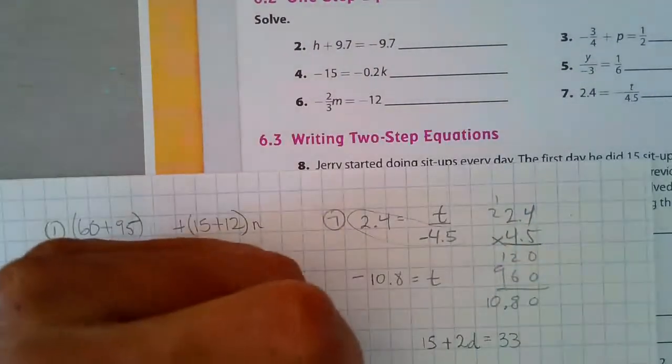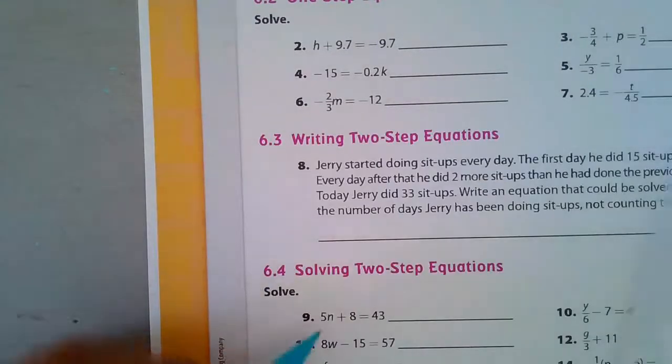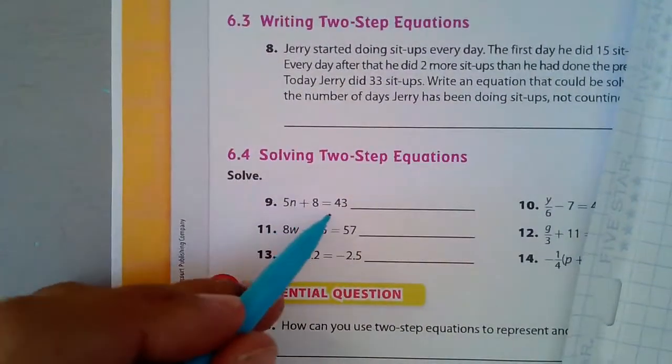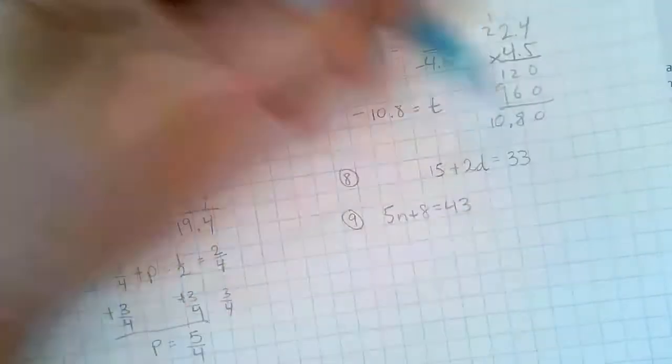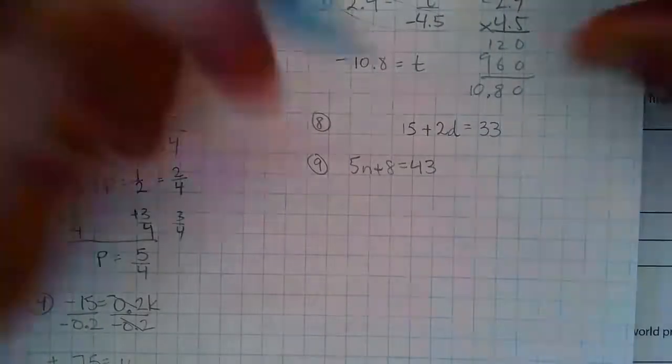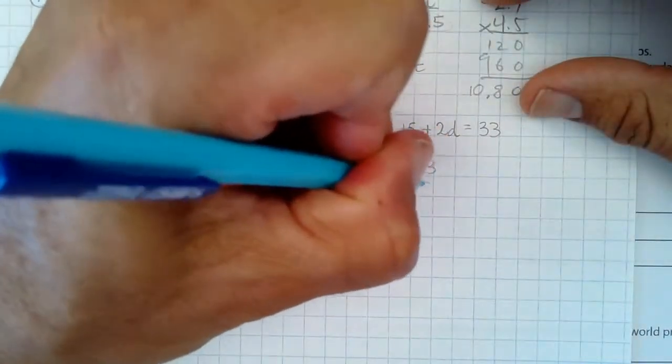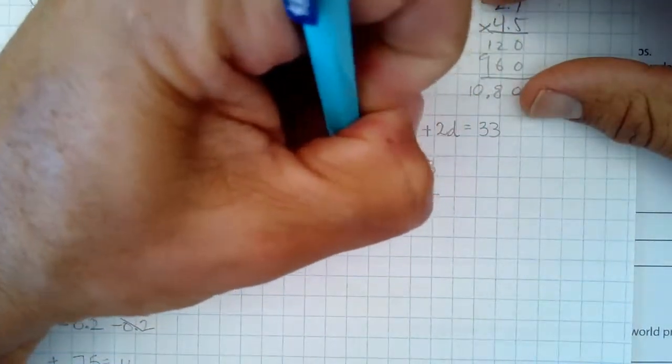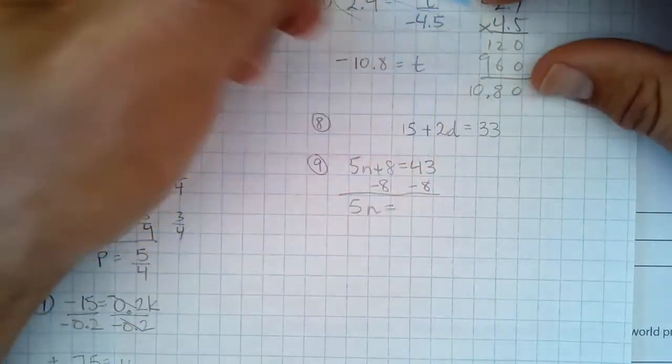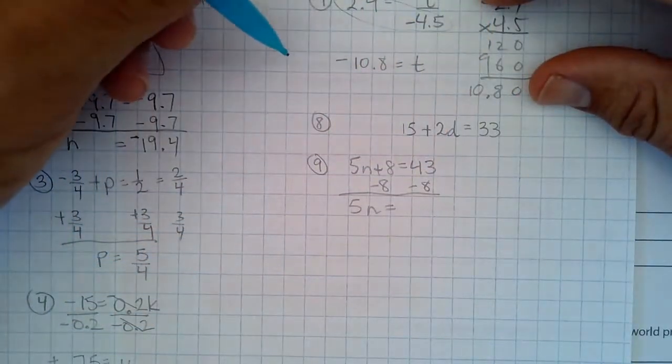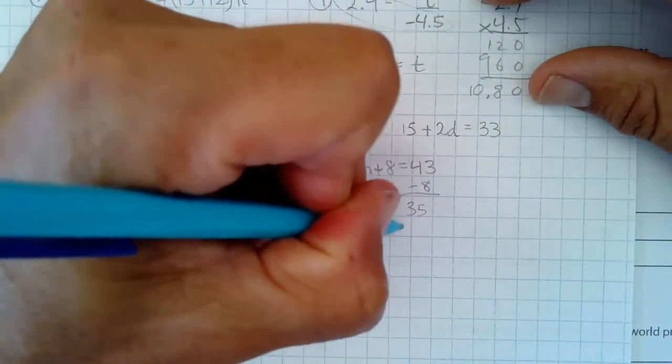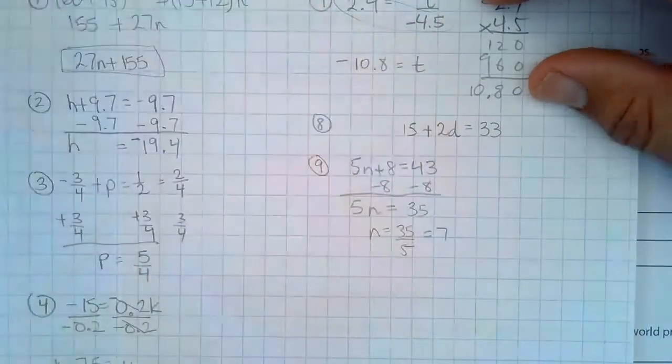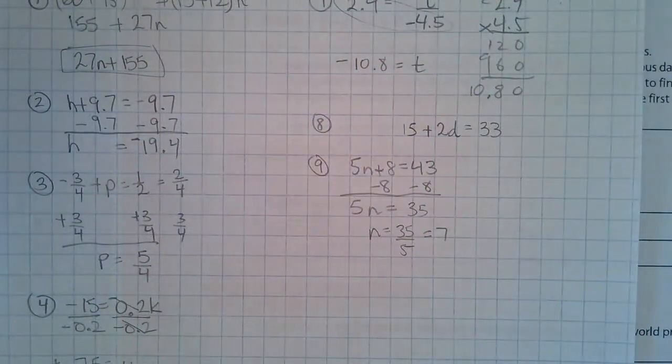Number 9, two-step equations. We have 5n plus 8 equals 43. And first, I'm going to subtract 8. 5n equals 35, I believe. And then, n equals 35 divided by 5, which is 7.